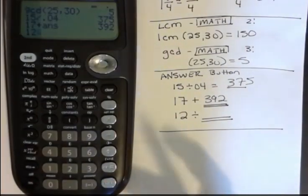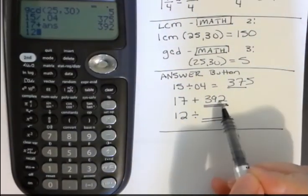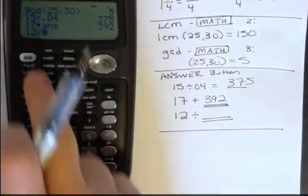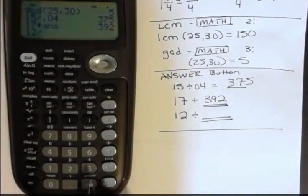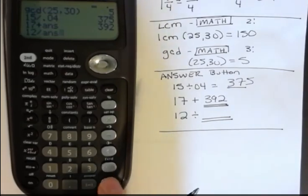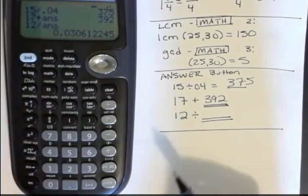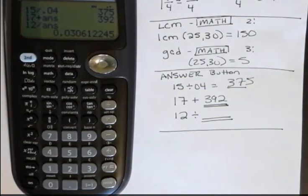Then I have 12, and oh, now I want to divide 12 by 392. Again, I'm going to say divided by second function and answer. And that's going to divide 12 by 392 and give me an answer. So I don't have to go back and enter those answers again. If it's the last thing, I can just use that answer button.